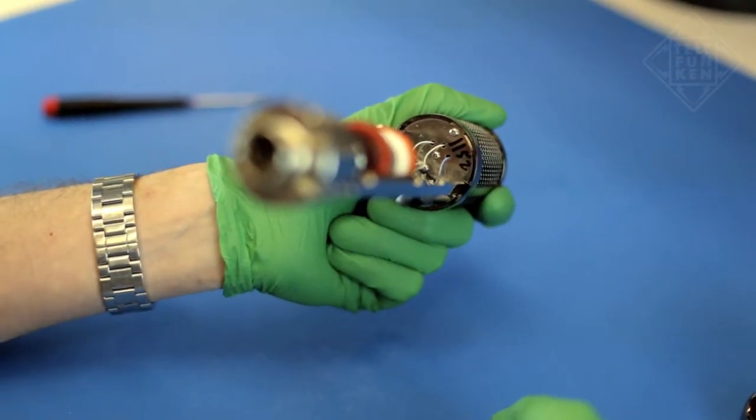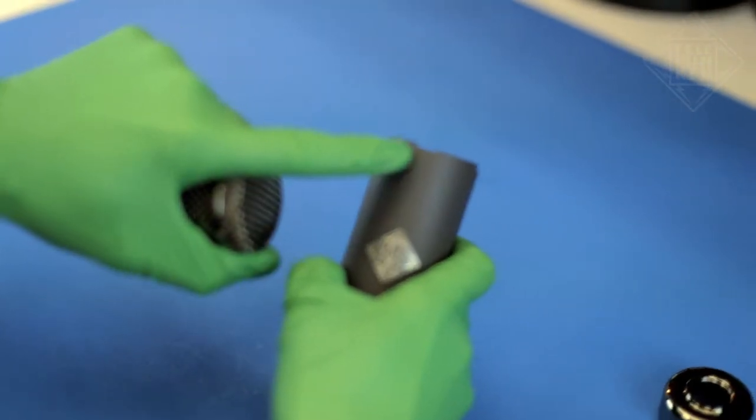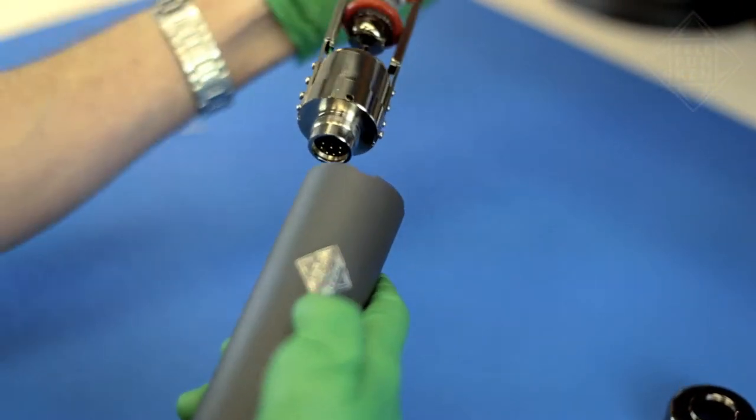Locate the notch on both the top plate and the body tube. Place the body tube back over the microphone, lining up the notches.